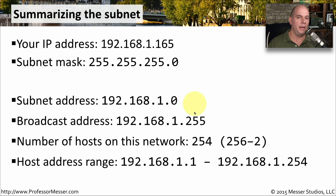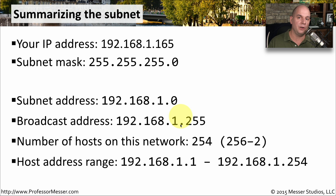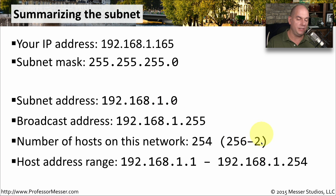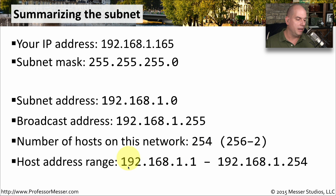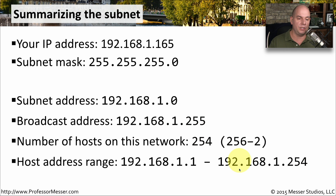The valid devices on this network are every number between the subnet address and the broadcast address. With eight host bits, we have 256 total numbers. Subtract the subnet address and broadcast address — that's minus two — giving us 254 total usable hosts. The first host is 192.168.1.1, and the last is 192.168.1.254, the address just before the broadcast.